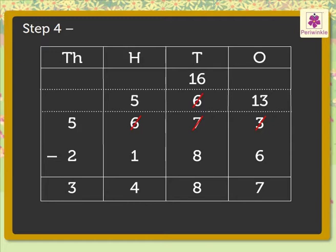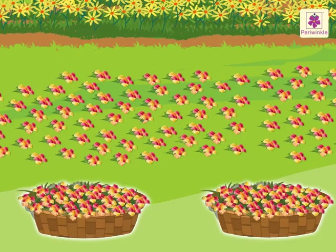Yippee! We got the answer. 3,487. Thus, 5,673 minus 2,186 is equal to 3,487. Let us tie them up quickly and send them to the market.